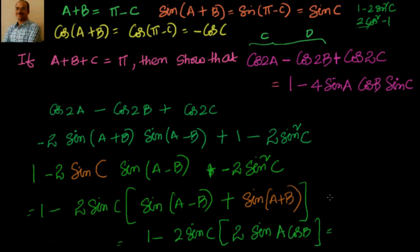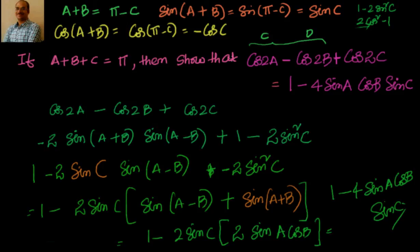So the answer is 1 minus 2 times 2, that is 4 sinA cosB sinC. Now we have looked at all cos2a, sin2a. Now let us look at a plus b plus c equal to pi — if a, b, c are angles of a triangle, what is sinA plus sinB plus sinC? Or sinA minus sinB plus sinC? Or sinA plus sinB minus sinC? We will look into those problems in the coming videos.